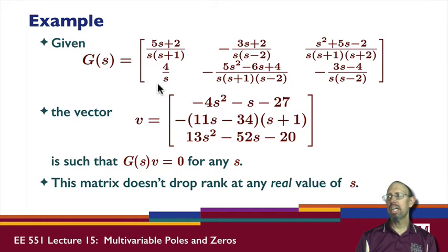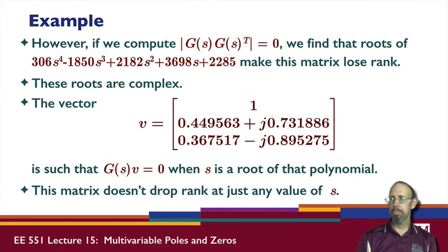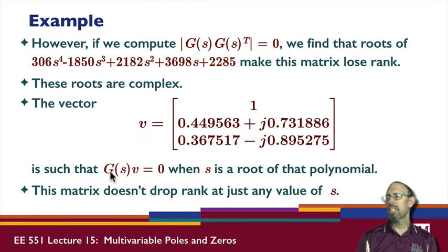In that case, the definition of a zero is trivial. We're concerned with the case when we have a non-zero vector multiplying both sides. If we compute G of S times G of S transpose determinant and set that equal to zero, we find this polynomial. The roots of this polynomial will make the matrix lose rank. In general, these roots are complex. This vector is such that G of S times V equals zero for a particular value of S that is a root of this polynomial, but this matrix does not drop rank for just any value of S.